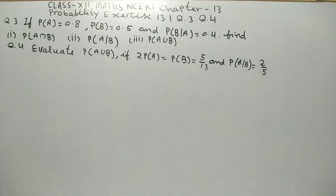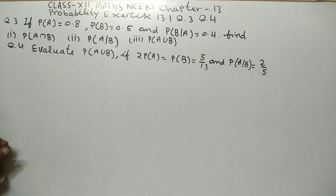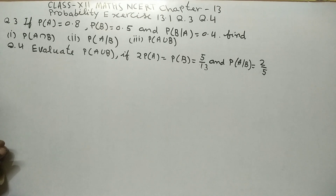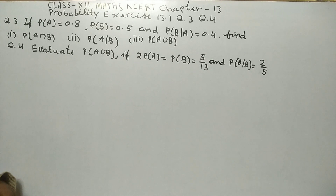If probability of A equals 0.8, probability of B equals 0.5, and probability of B given A equals 0.4. Find: first part, probability of A intersection B; second part, probability of A given B; third part, probability of A union B.